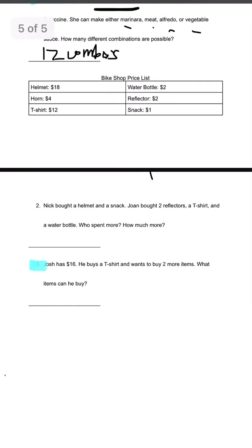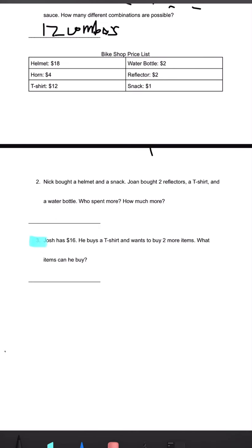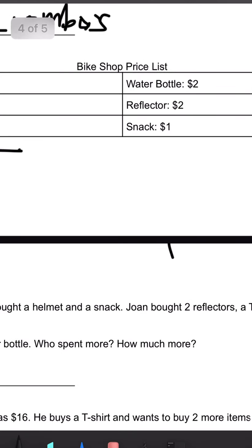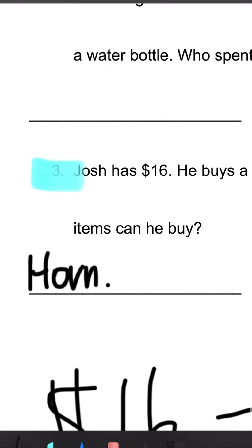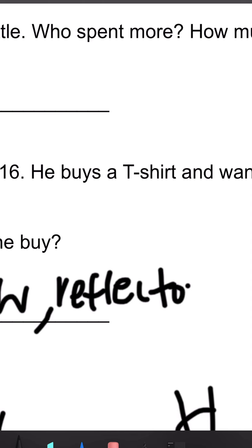Let's take a look at last problem, number three. Josh has $16. He buys a t-shirt and wants to buy two more items. What items can he buy? So he already bought a t-shirt. We're looking at this table. So we're doing $16 minus the price of a t-shirt, which is $12. So that becomes $4 left. So we're going to find items that are less than or equal to $4. So we know that he could buy a horn, water bottle, reflector, and snack.